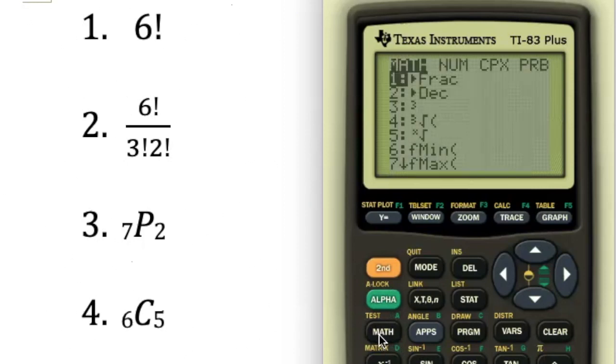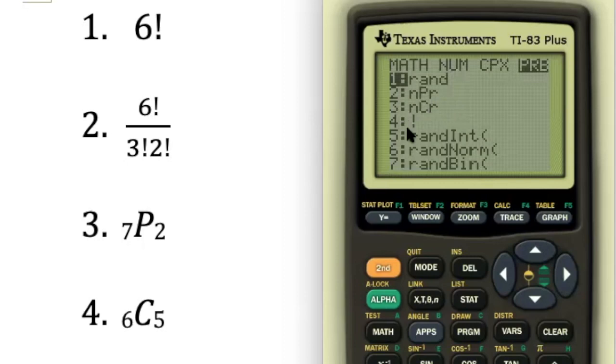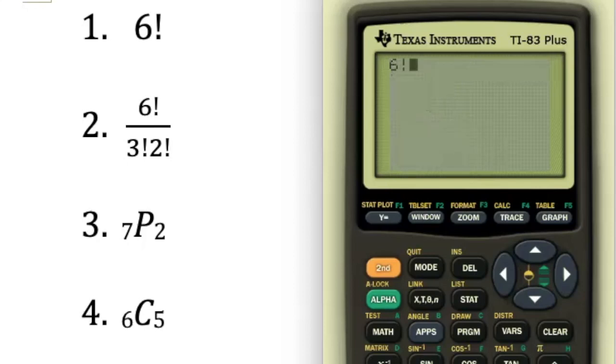On the left-hand side of the calculator, you have this math button. Press the math key, and you have a math menu, a number menu, a complex menu, and a PRB menu. PRB stands for probability. Using your right arrow key, go over to PRB, and you can see that the exclamation point is choice 4. I'm going to go down to choice 4, hit enter, hit enter again, and it has calculated my factorial correctly.